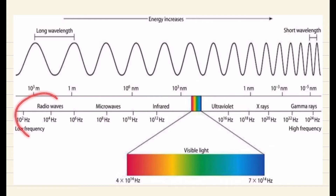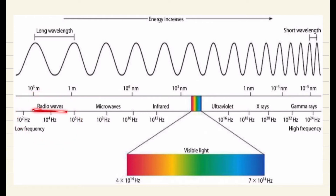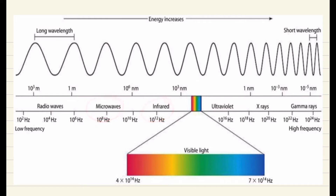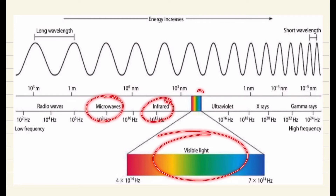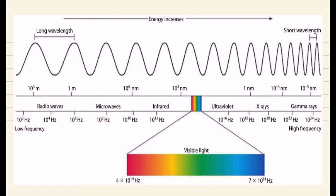So let's start from the left side. First of all, we have the radio waves. Radio waves have one of the very large wavelengths. Then comes the microwaves, infrared waves. Then this is the visible light waves that we see all around us. Then we have ultraviolet waves.